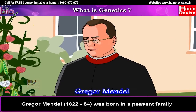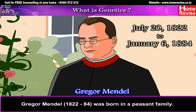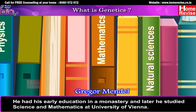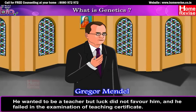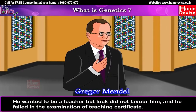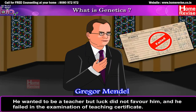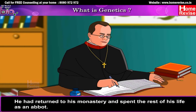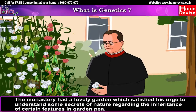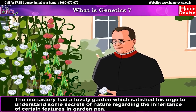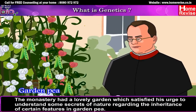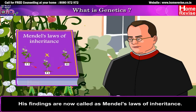Gregor Mendel (1822–1884) was born in a peasant family. He had his early education in a monastery and later studied science and mathematics at the University of Vienna. He wanted to be a teacher but failed the teaching certificate examination. However, what he discovered later has made him a teacher of teachers. He returned to his monastery and spent the rest of his life as an abbot. The monastery had a lovely garden which satisfied his urge to understand the secrets of nature regarding inheritance of certain features of garden peas. His findings are now called Mendel's Law of Inheritance.